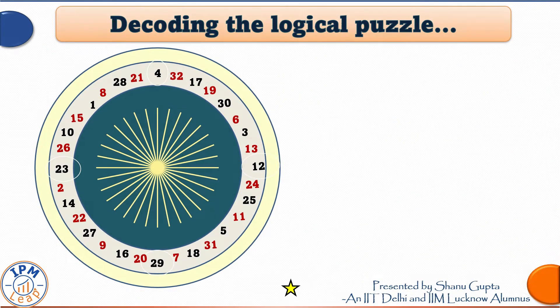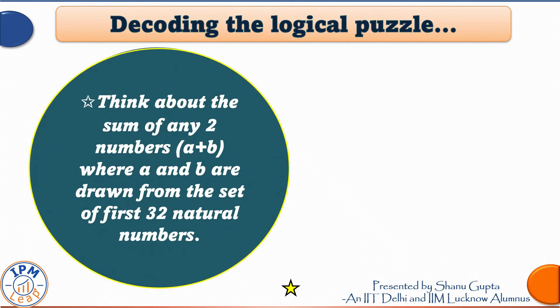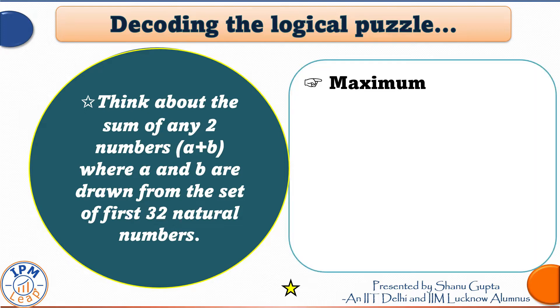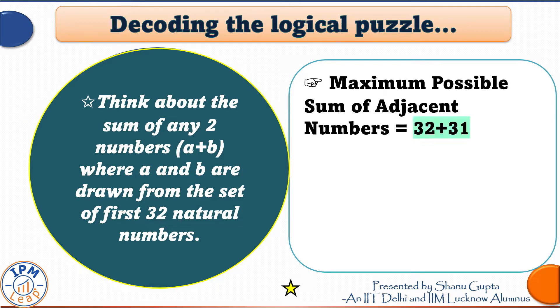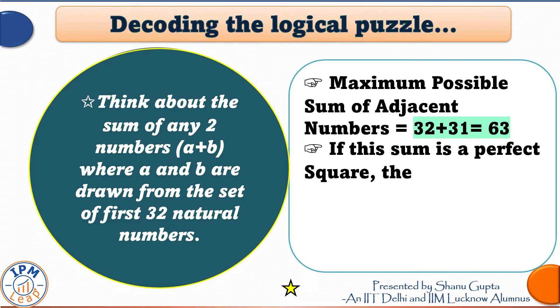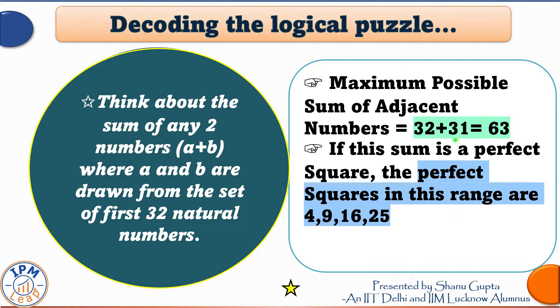So in this circular arrangement of 32 numbers, we know that the sum of adjacent numbers is a special one. It's a perfect square. So let's think along those lines. Maximum possible sum of adjacent numbers is equal to 32 plus 31 where 32 is the largest number and 31 is the second largest number. So maximum possible sum is 63.